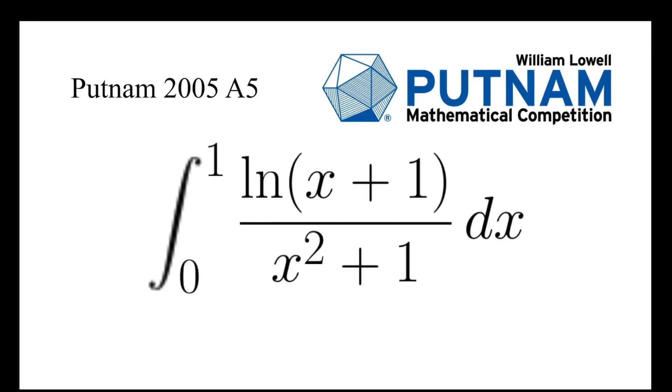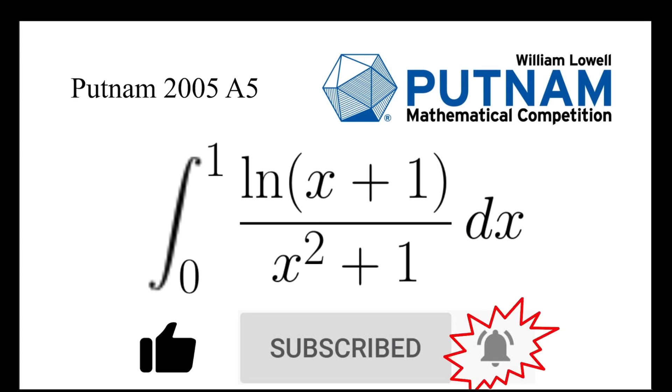In this video, we are going to integrate the function natural log of x plus 1, all divided by x squared plus 1 dx from x equals 0 to 1. This is a problem from Putnam 2005. Before we move on, don't forget to give a like, subscribe to my channel, and turn on post notifications.